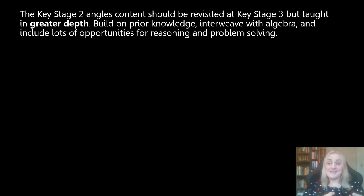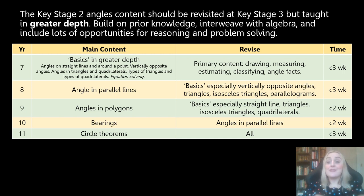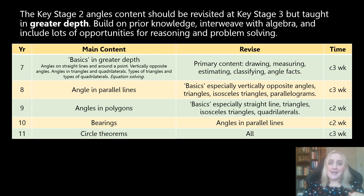The journey of angles throughout secondary school is quite a big one. There's a lot of angles content at Key Stage 3 and 4, and you might be doing angles work every year. In Year 7 you might revisit primary material but in greater depth and add in algebra; Year 8 you might introduce parallel lines; Year 9 perhaps polygons; Year 10 bearings; Year 11 circle theorems. Every school will have a different structure, but that initial base is really a revisiting of Key Stage 2 material going into greater depth. It is necessary to revisit it and make sure students really know that stuff inside out, because they're going to need it in Years 8, 9, 10 and 11.